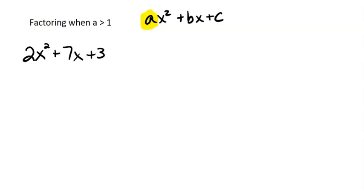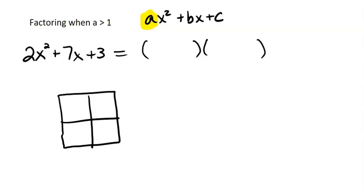This is still our area, and we're looking for what two things multiply to give us that. We'll do that by starting with our box. We still put our x squared term in that top left box, and our constant term in the bottom box.